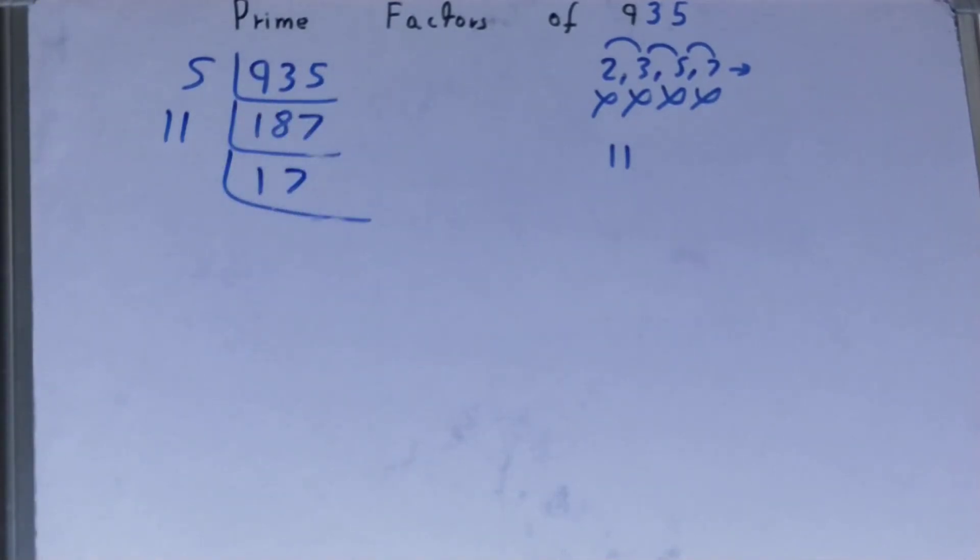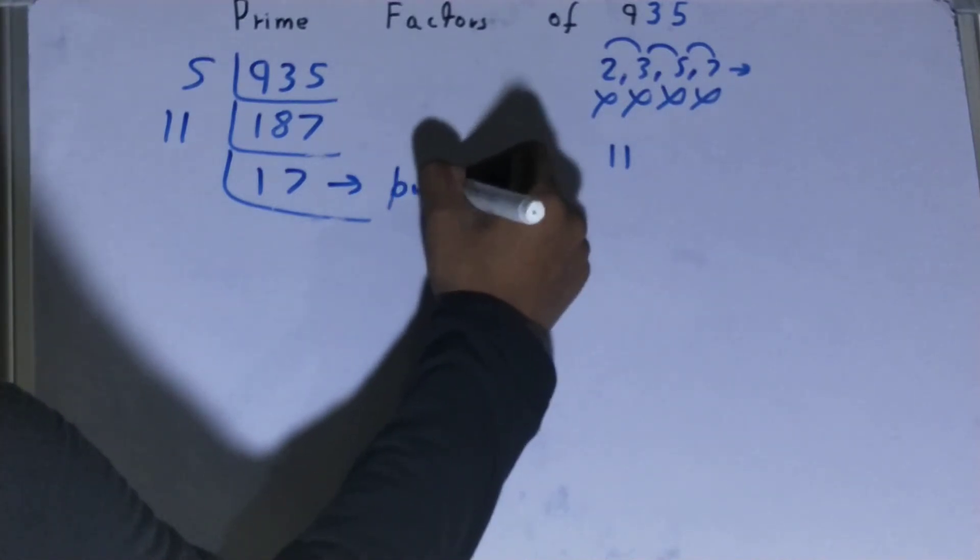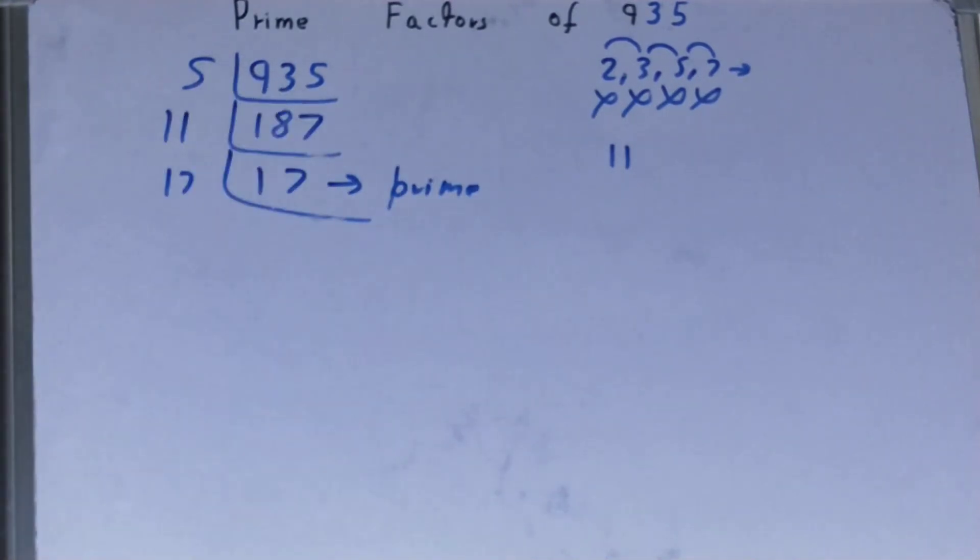11 times 7 is 77, so you will be left with 17. Now this 17 is further not divisible by 11, and 17 is also a prime number. So 17 is only divisible by itself.